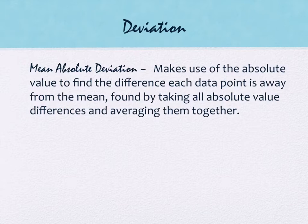So the first one is called mean absolute deviation. It makes use of an absolute value to find the difference between each data point and the mean. It's found by taking all the absolute value differences and averaging them together. So I'm going to have you write down the three different things we're doing, and then we're going to actually do them. This is mean absolute deviation - it has to do with absolute values.